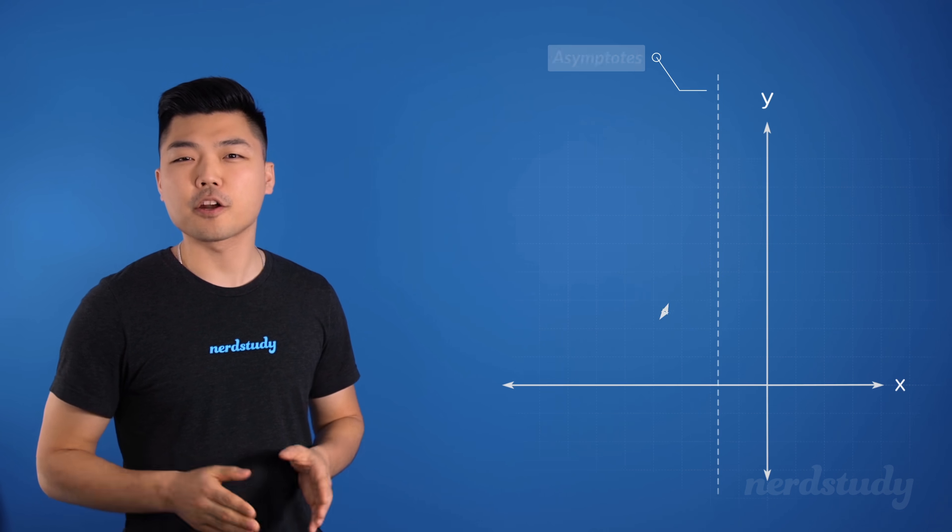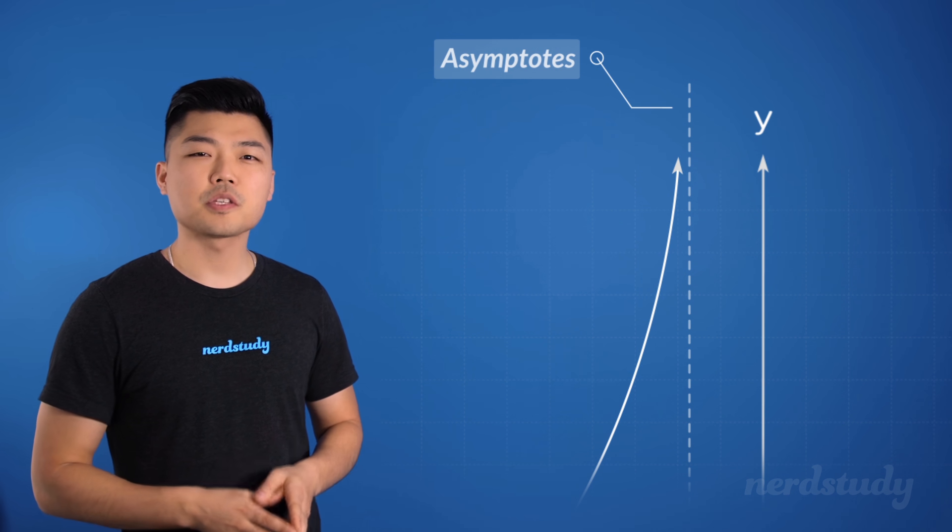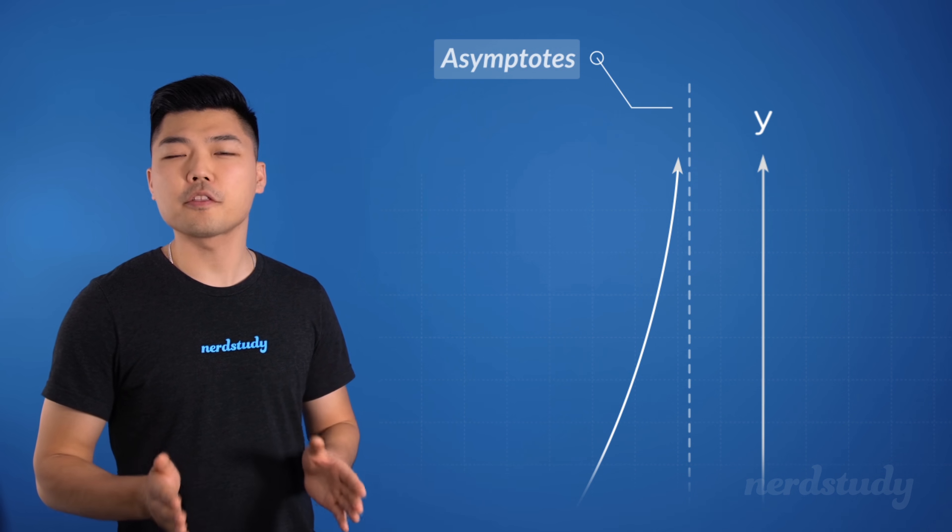An asymptote is a line that a curve approaches but never really touches. Some graphs have an asymptote and other graphs do not.